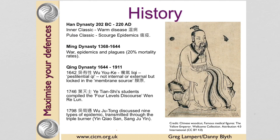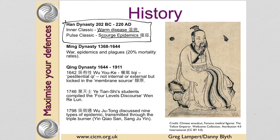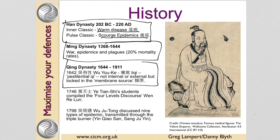Looking at the history, this was talked about in the Han dynasty — the Nei Jing talked about warm disease and the pulse classics talked about scourge epidemics. During the Ming dynasty there were lots of plagues and very high mortality rates, and then later during the Qing they started using different methods of treating these epidemics.